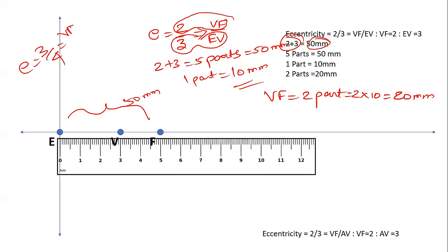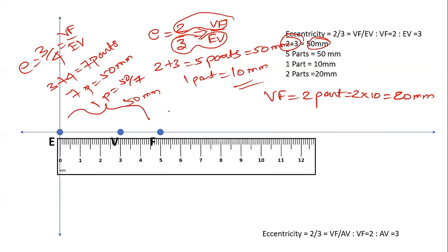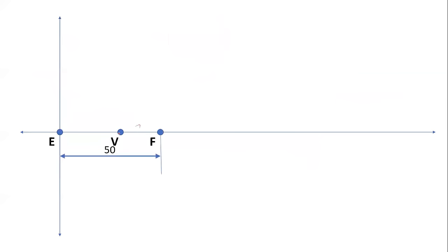For example, if the eccentricity were 3/4, total parts would be 3 + 4 = 7 parts, and 7 parts = 50mm so 1 part = 50/7mm. In our problem, with eccentricity 2/3, the VF distance is 20mm. Mark point V at 20mm from F on the axis.